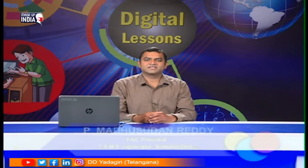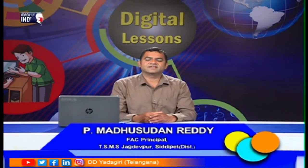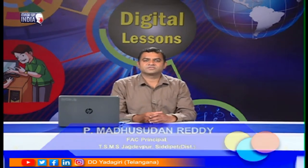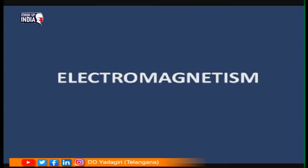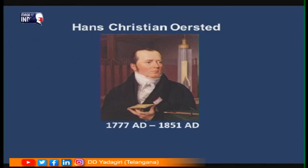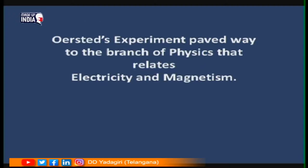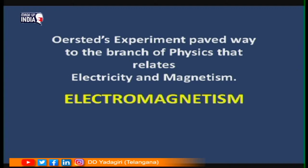Hello students, welcome to the digital classes. In the earlier classes, we have discussed electricity, Ohm's law, and the heating effects of current. In this class, we will discuss electromagnetism. It was thought that electricity and magnetism are completely different concepts until Orsted's experiment. Hans Christian Orsted discovered the magnetic effect of electric current, paving the way to the branch of physics that relates electricity and magnetism — electromagnetism.